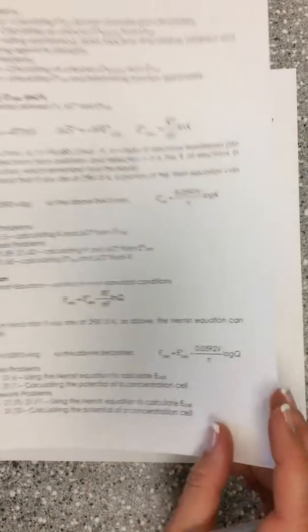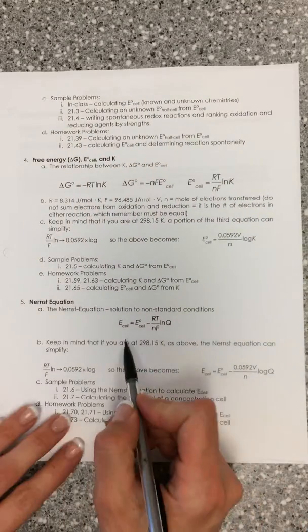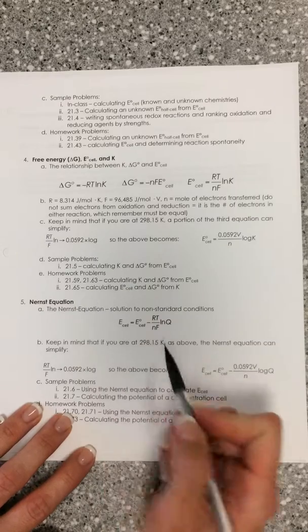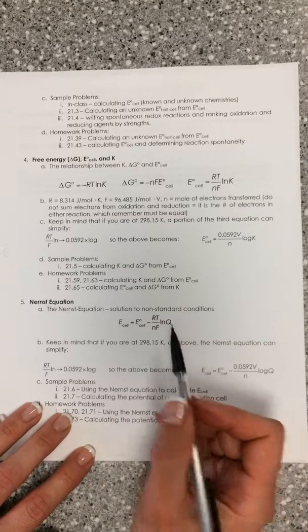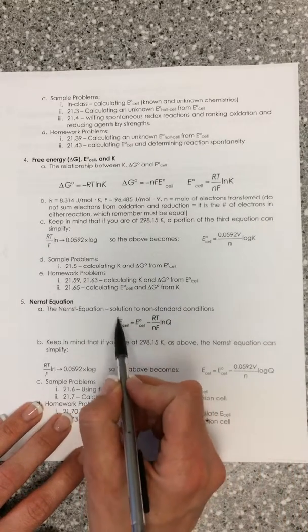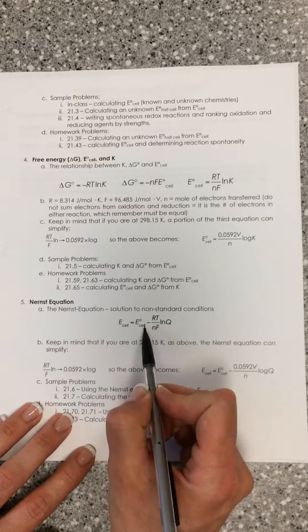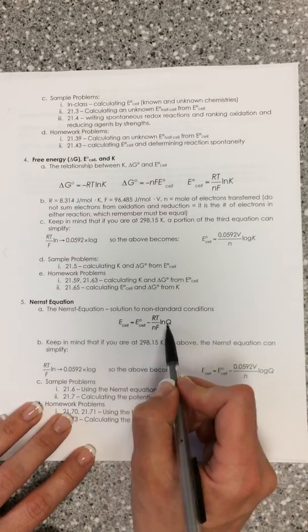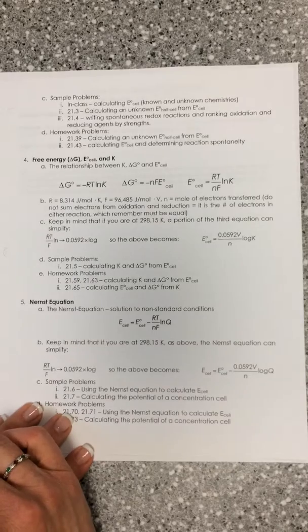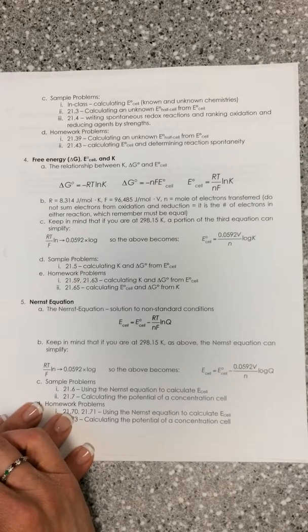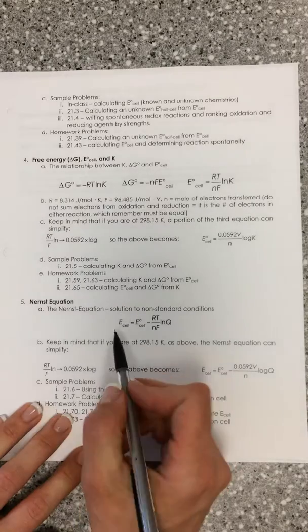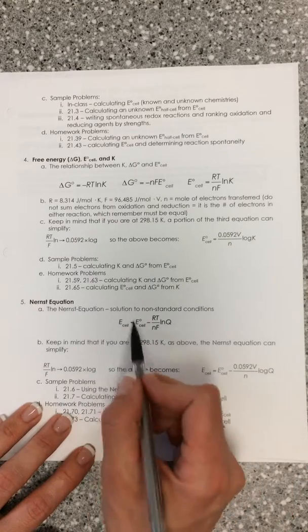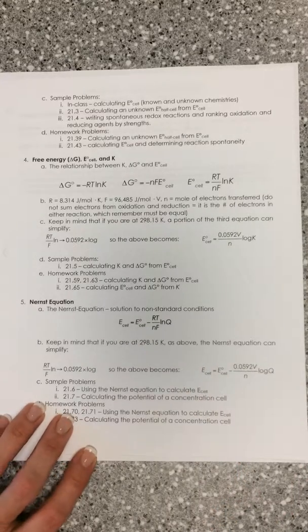The last section of chapter 21 that is really part of our critical skills is thinking about the Nernst equation. The Nernst equation is very similar to the equation we saw in chapter 20 that allowed us to relate delta G to delta G naught. What if you're not at one molar? What if your concentrations are not one atmosphere for your gases? How does that affect and change your free energy or in this case our electrochemical potential?